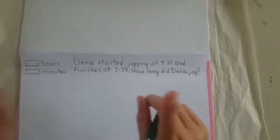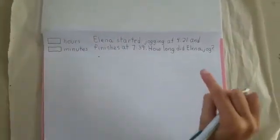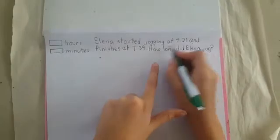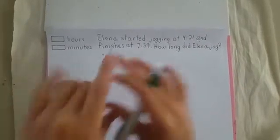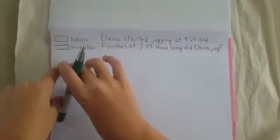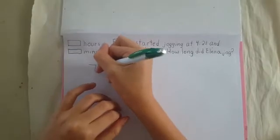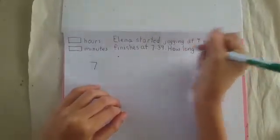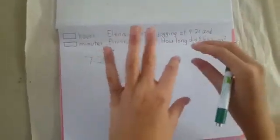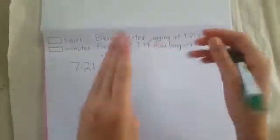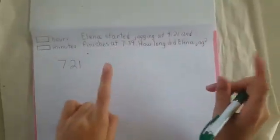Let's start with step number one. First, let's figure out how many hours passed between 4:21 and 7:39. If we move forward three hours from the start time, it will be 7:21, because 21 can still fit within 39. But we can't move forward four hours without going past 7:39. So three whole hours have passed since Elena started.